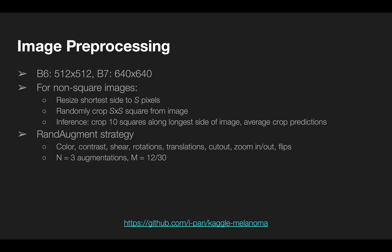I trained on both 512x512 and 640x640 images. For non-square images, I randomly cropped a square from the image during training. During inference, I cropped a series of 10 squares spanning the whole image and averaged the predictions from the crops.